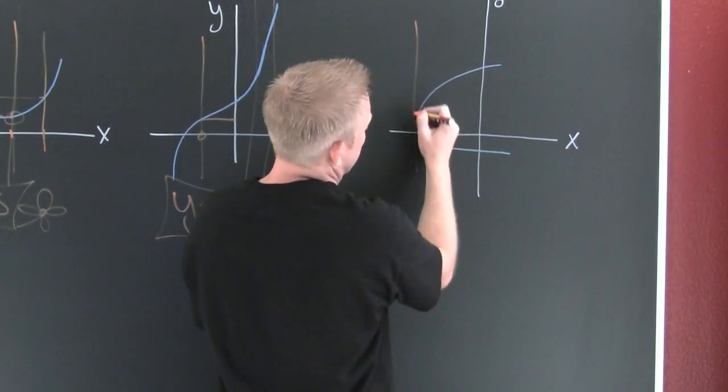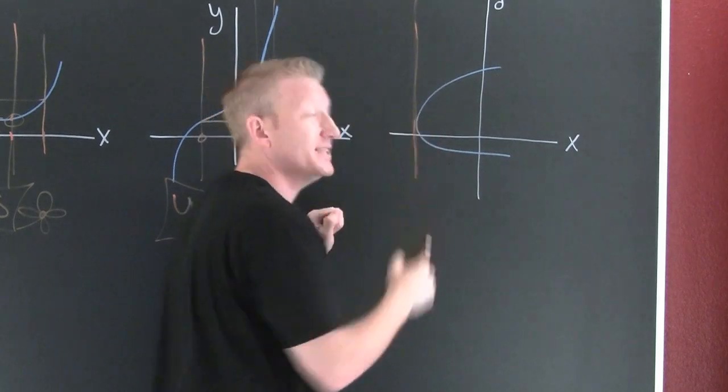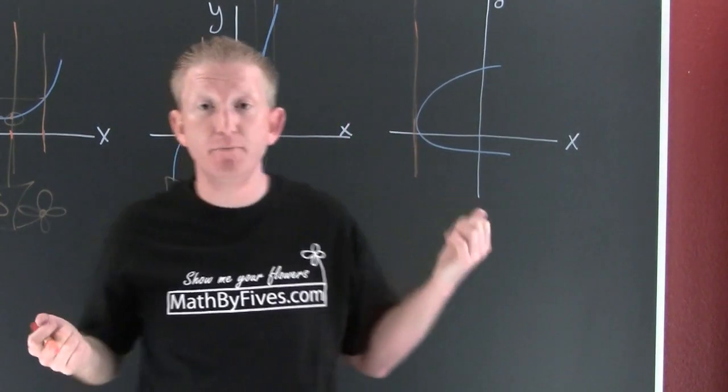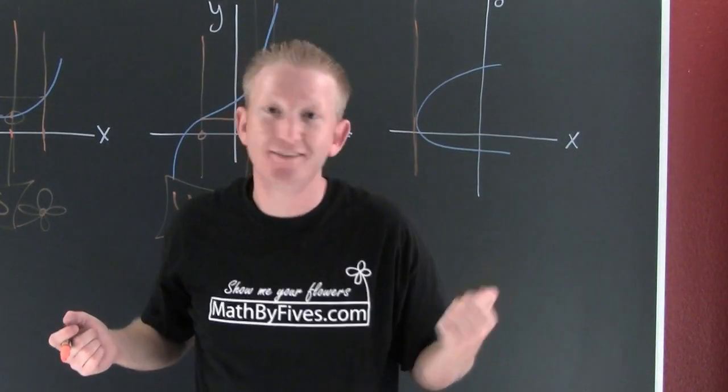Okay, now on this next one. Oh boy, I got this point right here. I can draw a vertical line, a vertical line, and it only touches that graph in one spot. Does that mean it's a function?